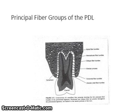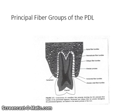The alveolar crest fiber group extends from the cervical cementum running downward in a diagonal direction to the alveolar crest. This fiber group resists horizontal movements of the tooth. The horizontal fiber group is located apical to the alveolar crest fibers and extends from the cementum to the bone at right angles to the long axis of the root, resisting horizontal pressure against the crown. The oblique fiber group is located apical to the horizontal group and extends from the cementum to the bone in a diagonal direction, resisting vertical pressure that threatens to drive the root into its socket. The apical fiber group extends from the apex of the tooth to the bone, securing the tooth in its socket and resisting forces that might lift the tooth out of the socket.